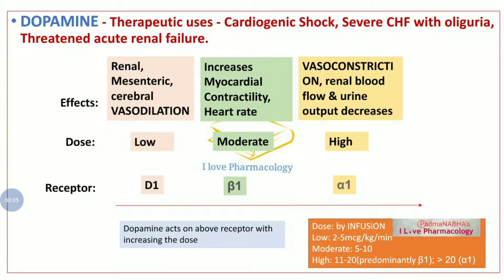Welcome to I Love Pharmacology. I'm Dr. Padmanabha. Today we'll see about the uses of dopamine and the action of dopamine based on the doses as well as the receptors they act on. Dopamine is a neurotransmitter, and it acts on different receptors depending upon the concentration of the drug in the plasma.